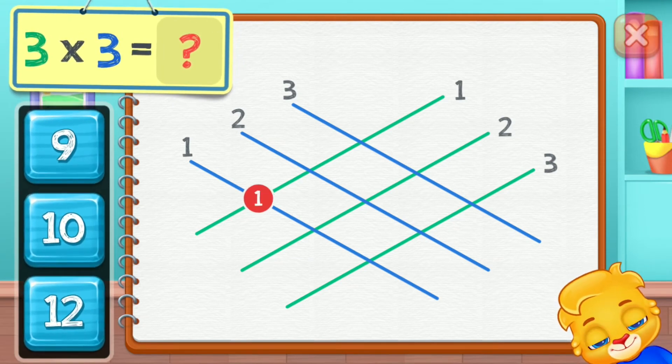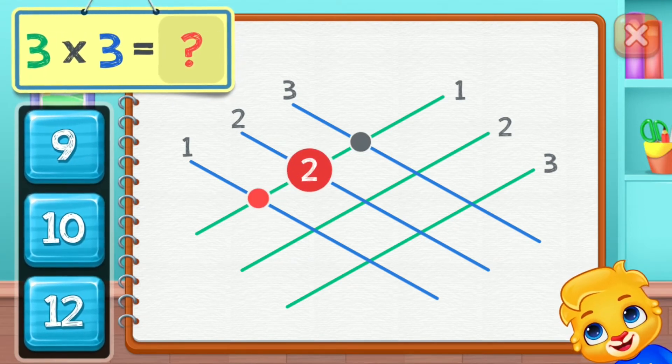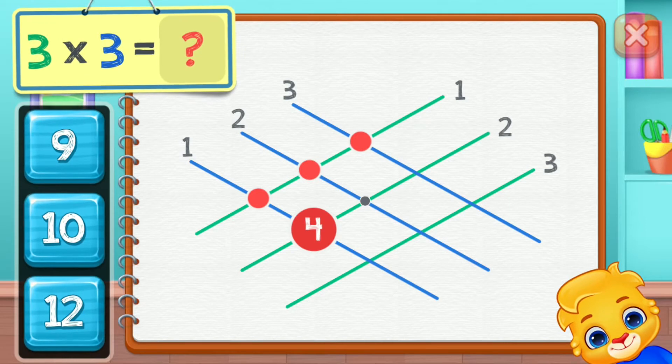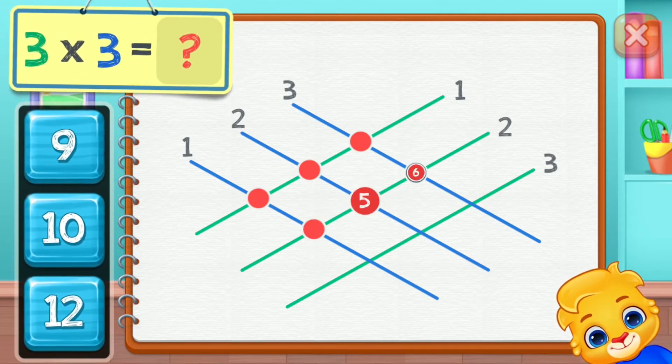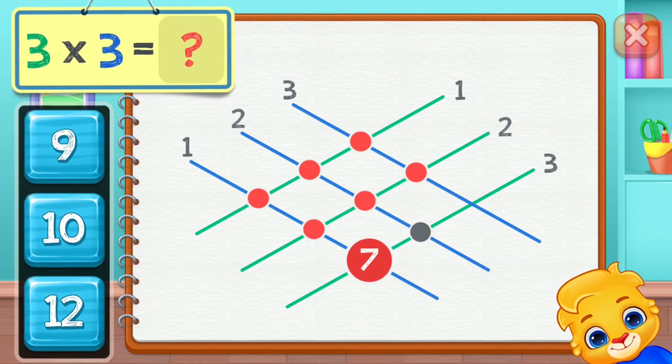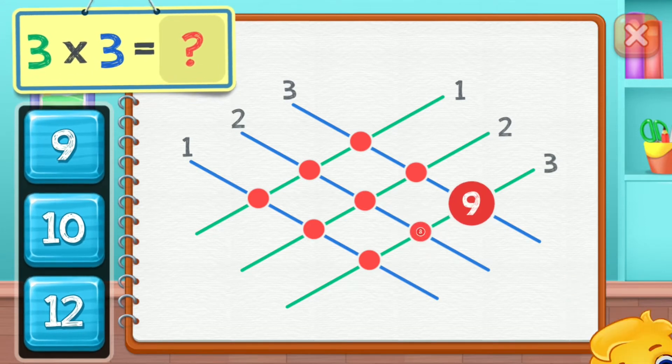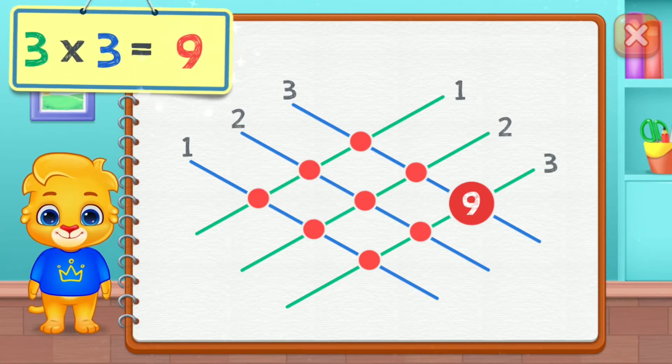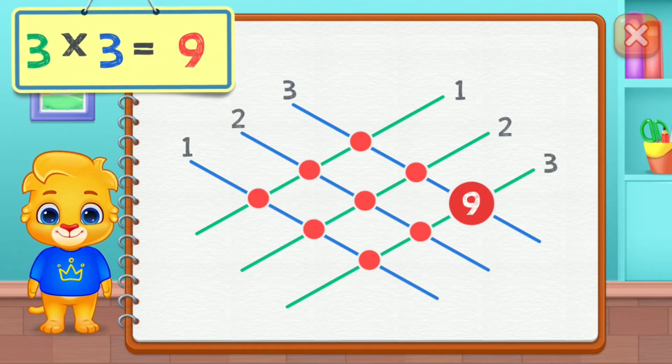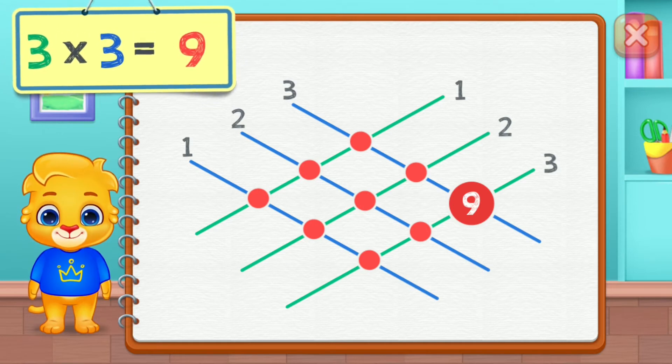1, 2, 3, 4, 5, 6, 7, 8, 9, 10, 12. 3 times 3 equals 9.